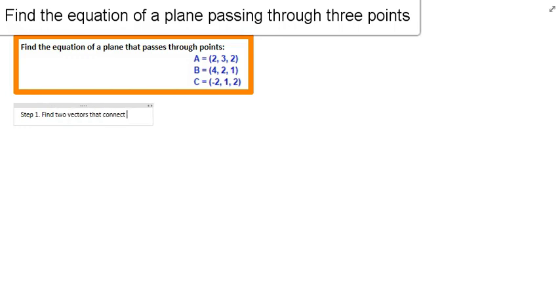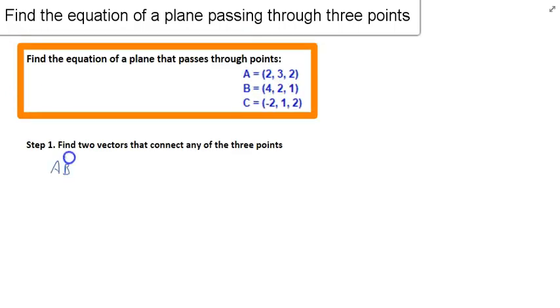First step, we're going to find two vectors that connect any of those three points. So a vector between A and B. All you need to do is subtract the X components, so 4 minus 2, and then the Y components, or the J components, and then the K components. That'll give us our vector, 2i minus J minus K.